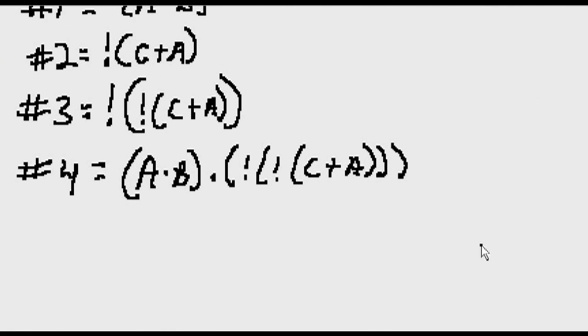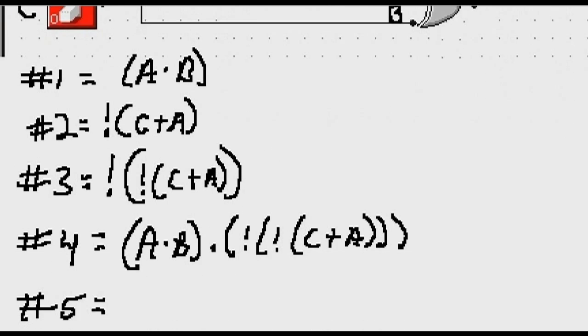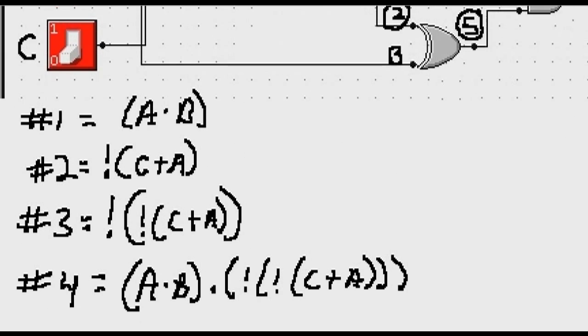Okay, let's go write that. Number five is equal to two XORed with B. XORed with B. So there's our two, which is NOT C plus A. Not C plus A. There's our two, and it's XORed with what? With B. There's our output five.